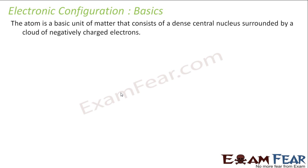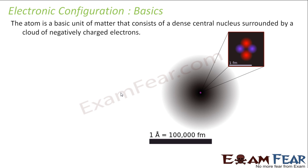The atom is the basic unit of matter. It has a very dense central nucleus surrounded by a cloud of negatively charged electrons. This is how an atom looks — a very dense central nucleus, and the whole surrounding region is a cloud of electrons that keep moving here and there with a very high speed.